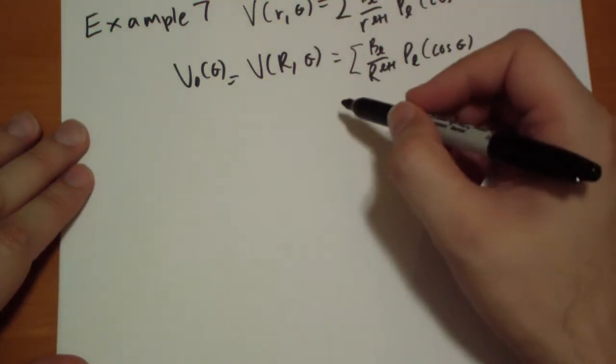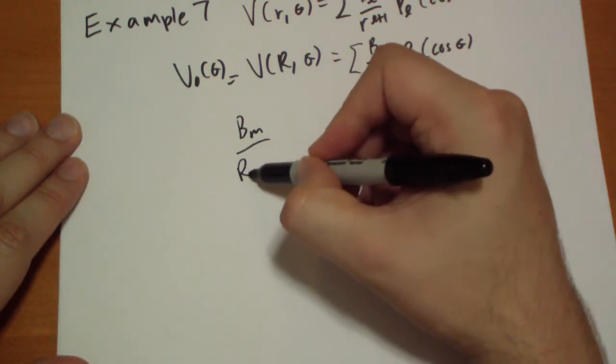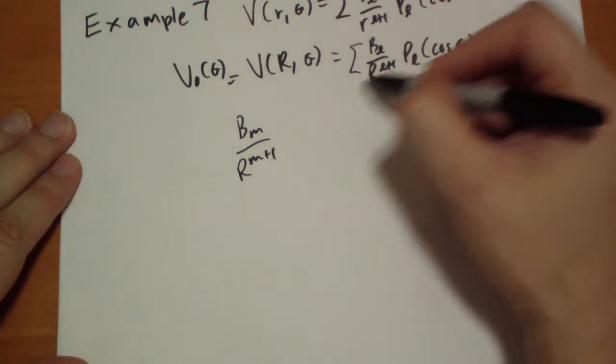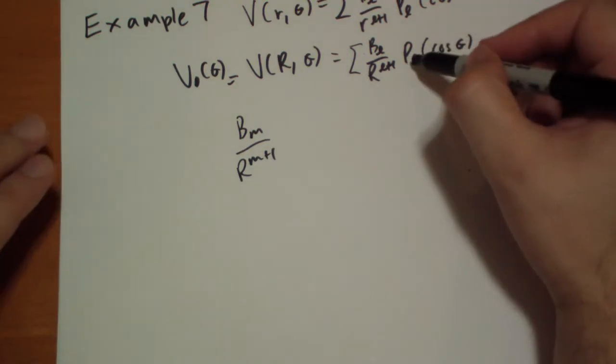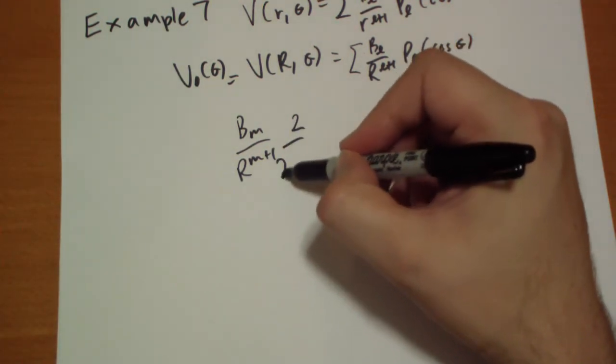When we integrate both sides, we get B_M over R to the M plus 1 times this, where L equals M. Remember that gave us 2 over 2M plus 1.